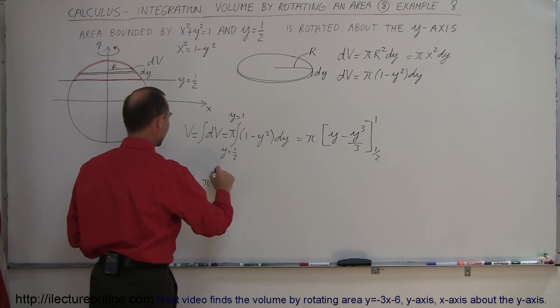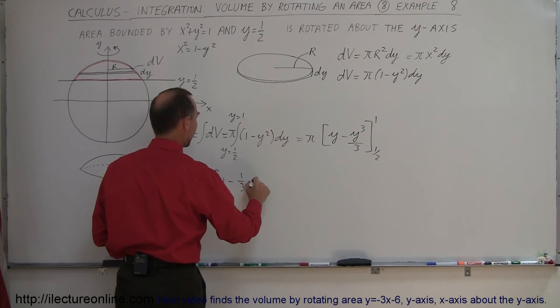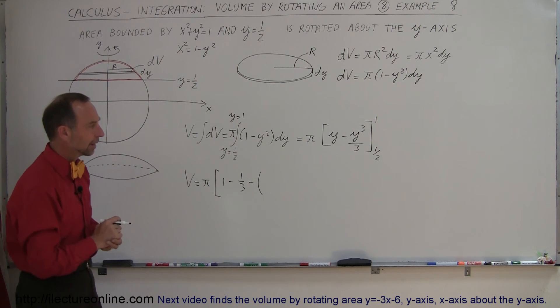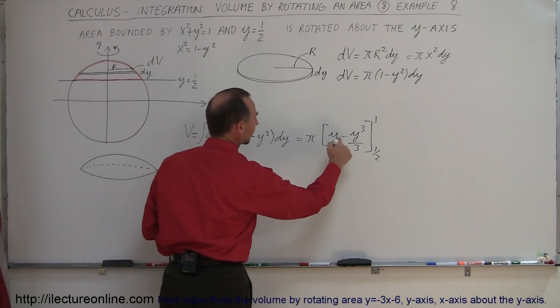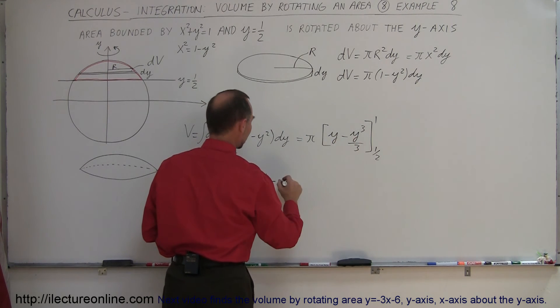I can plug in the limits. When I plug in the upper limit, so V is equal to pi times when I plug in the upper limit I get 1 minus 1 third, minus when I plug in the lower limit, and of course always use parentheses so you don't make a sign error, so minus plug in the lower limit I get 1 half minus when I plug in 1 half there I get 1 half quantity cubed divided by 3.